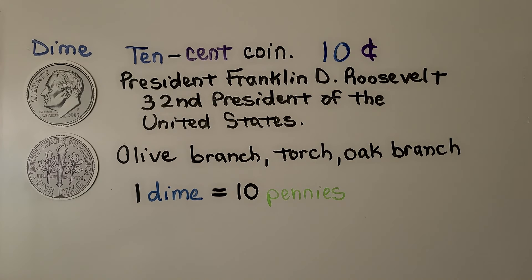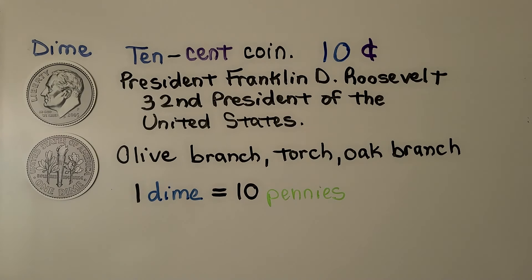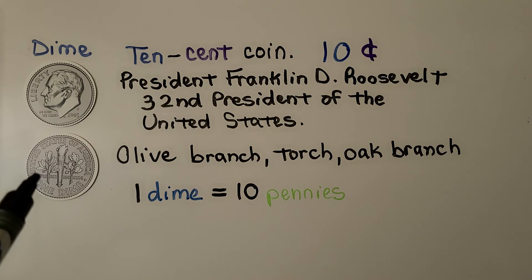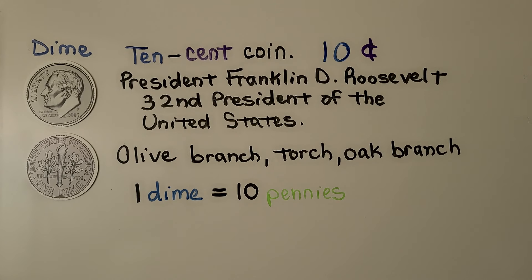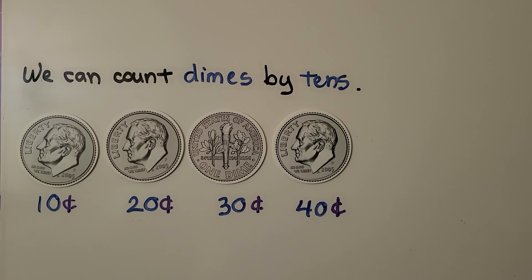This is a dime. It's a 10 cent coin, written as 10 with the cent symbol. On the front, it's got President Franklin D. Roosevelt, our 32nd president of the United States. On the back, there is an olive branch — if you look closely, you'll see the little round olives on it — a torch in the center, and an oak branch on the right side. One dime is equal to 10 pennies.